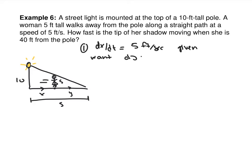What we want to know is dy/dt — because how fast Y is changing is how fast her shadow length is changing. Using similar triangles: S over 10 equals Y over 5, which means the total base over the pole height equals the shadow length over the lady's height. We can write S as X plus Y, so: (X plus Y) over 10 equals Y over 5. Multiplying through: 5 times (X plus Y) equals 10Y.